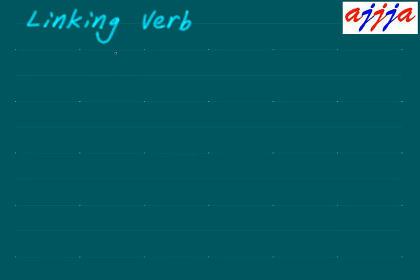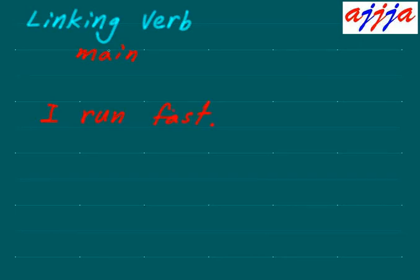We're talking about the linking verb. In other words, we have a few different styles of verb. Let's say main verb — if you say 'I do,' then that's a main verb. 'Do,' 'run,' 'I run' — like this. So maybe 'I run fast.' That's a main verb right there. We can also call this one an action verb.